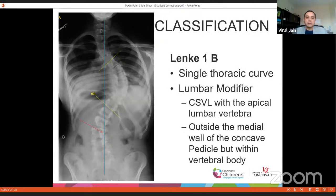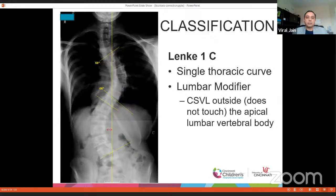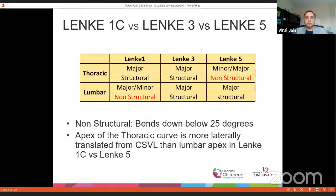When the central sacral line falls within the apex of the lumbar vertebra's pedicle, it is Lenke 1b. Lenke 1c is where the central sacral line falls outside of the vertebral body at the apex of the lumbar curve. This is related to the apex of the lumbar curve. When talking about Lenke 1c, we always have to differentiate it from Lenke 3 and Lenke 5. Non-structural here is any curvature that bends below 25 degrees.